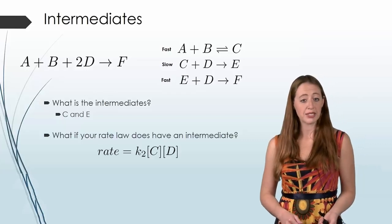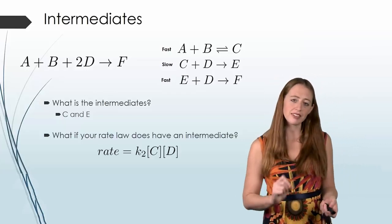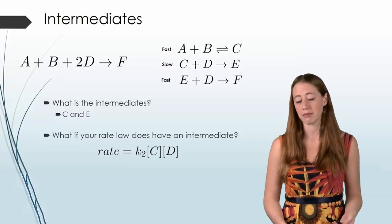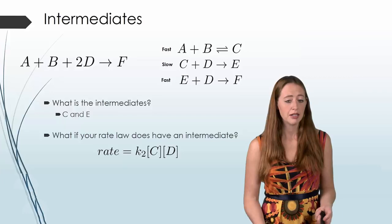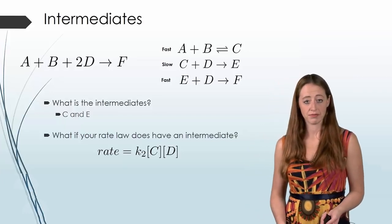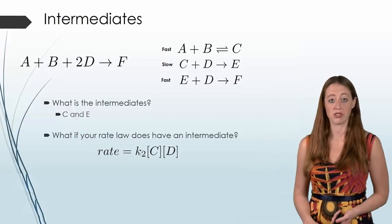So here, if we write our rate law, we end up with rate is equal to k2 - and you may say why is that little 2 there? That's just to specify that it's k for the second part - and then our concentration of C and our concentration of D, each raised to the first power just because there's no coefficients there.